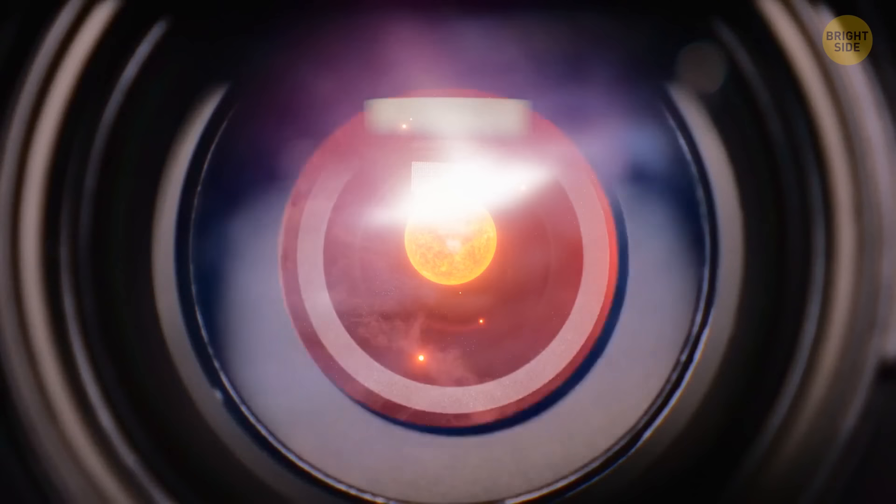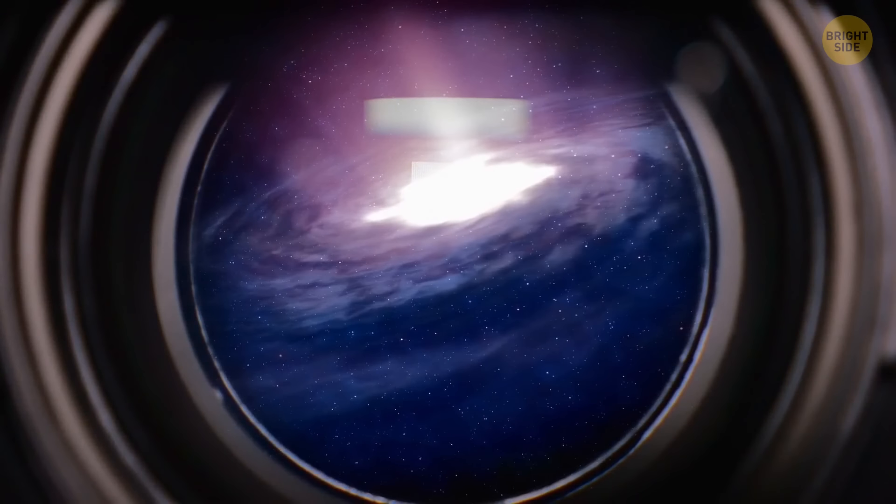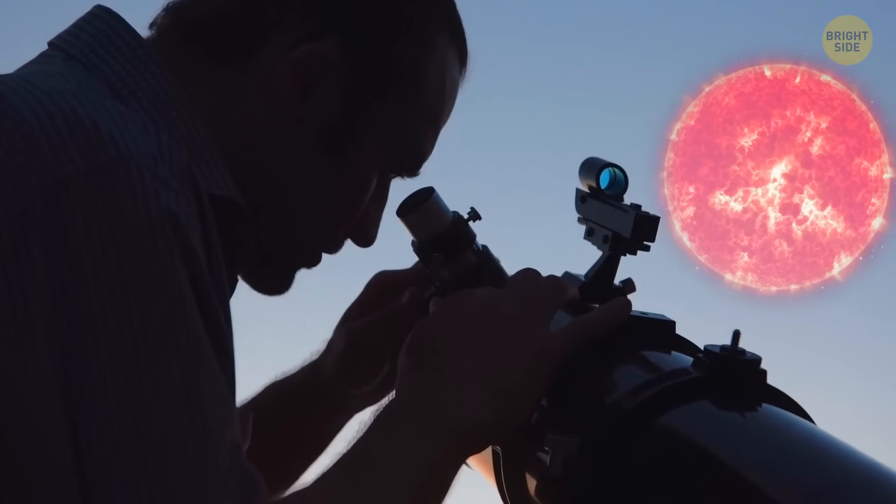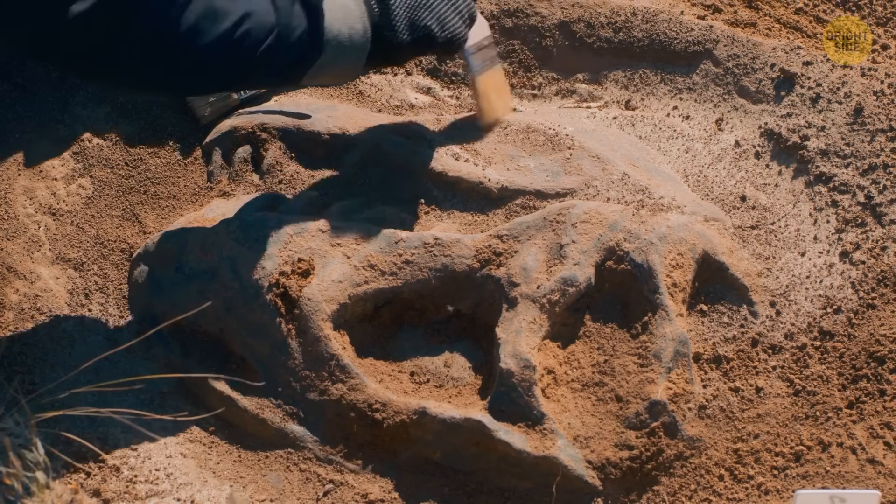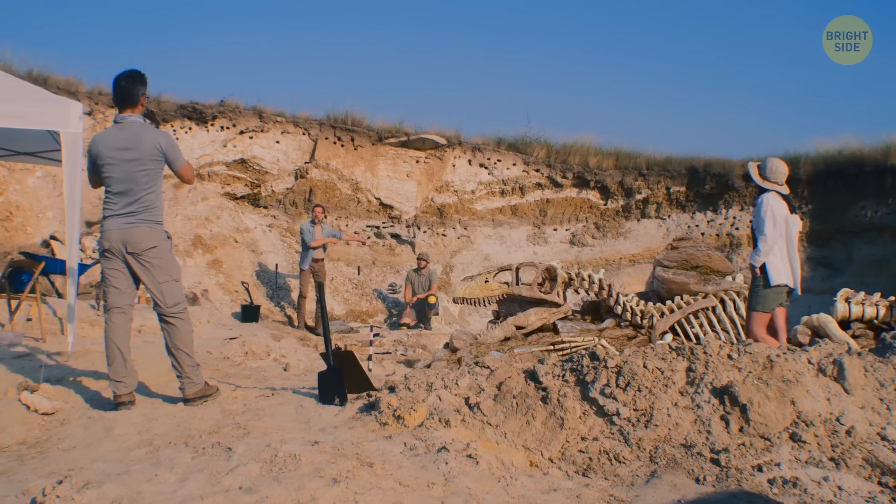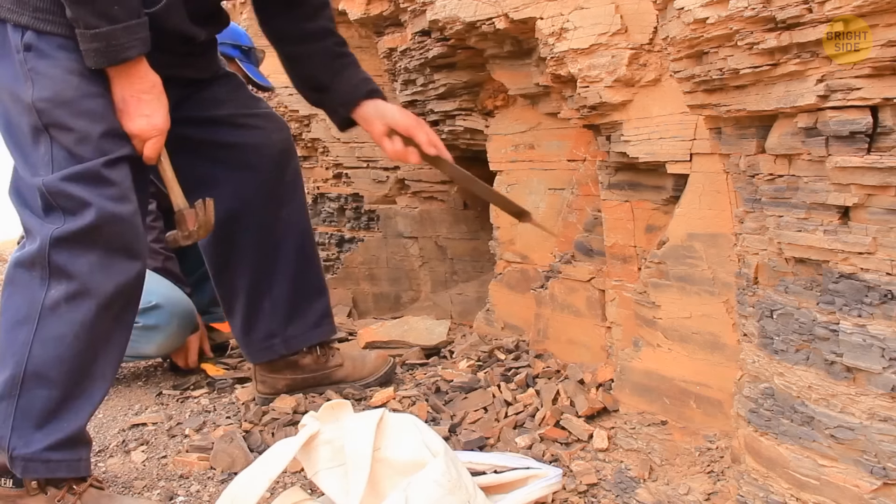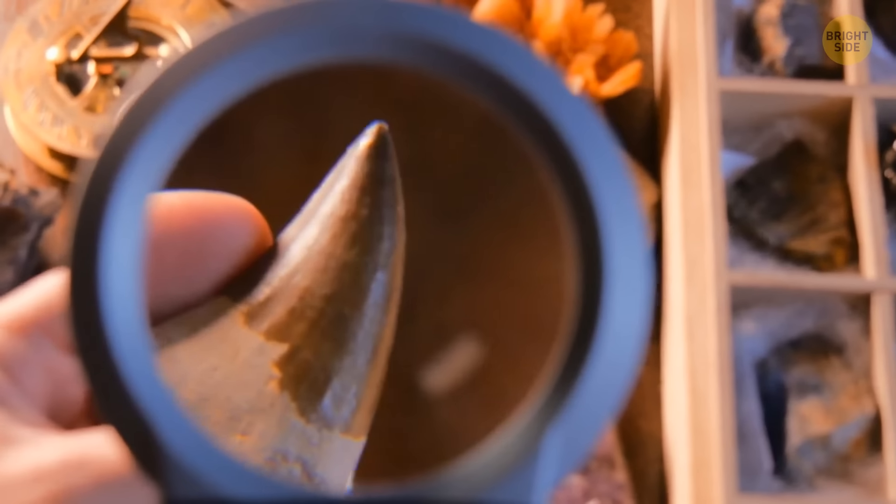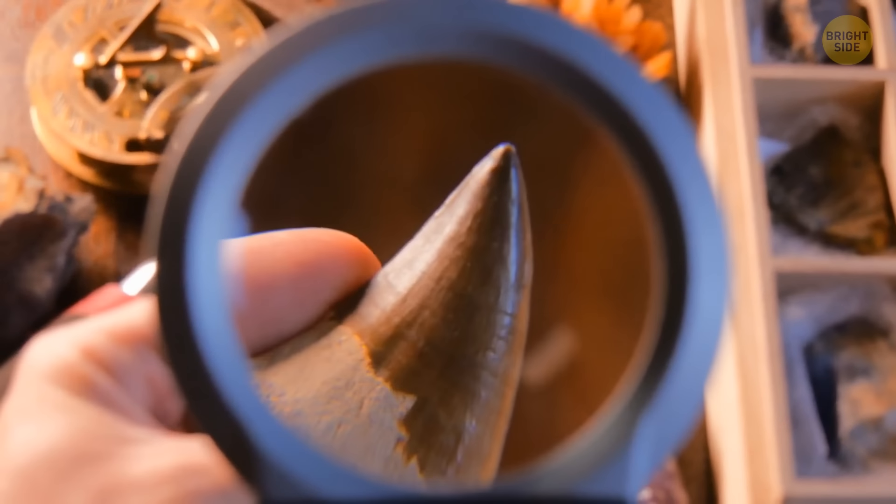However, all our attempts to find the culprit, unfortunately, failed. At the moment, we still haven't found any signs of Nemesis. Recent studies have called into question the theory of regular mass extinctions. If you look more into fossil records, you'll notice that these catastrophes occurred rather randomly, rather than on a clear schedule.